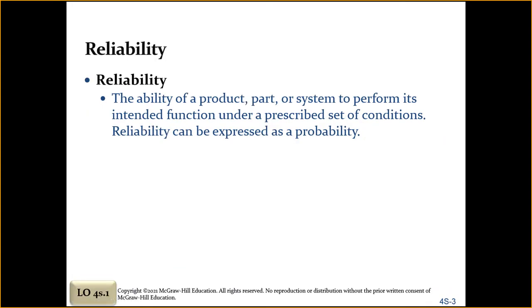Reliability is a measure of the ability of a product, part, or system to perform its intended function. To put it in easier terms, suppose that an item has a reliability of 0.99 — this means it has a 99 percent probability of functioning when it's intended to function and when it's needed. So a security system with a 99 percent reliability is going to function 99 percent of the times you want it to function.